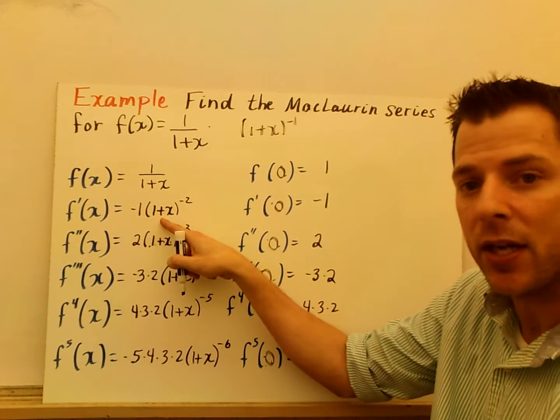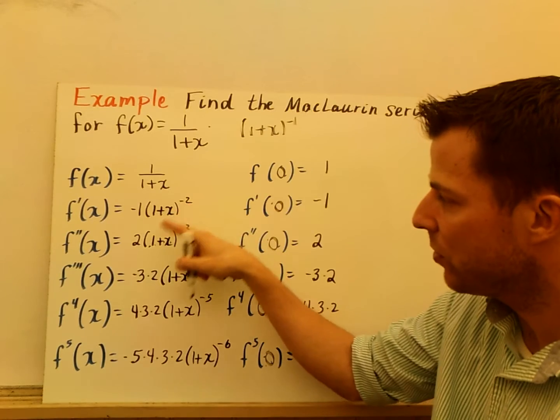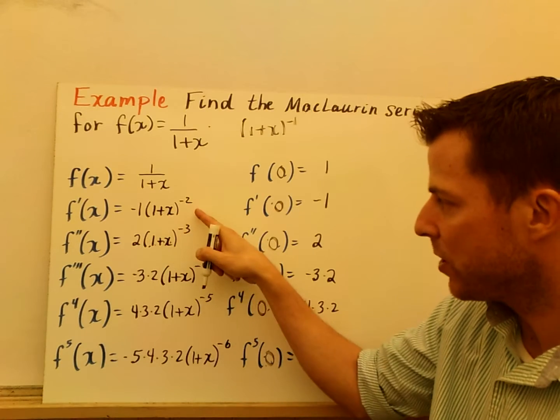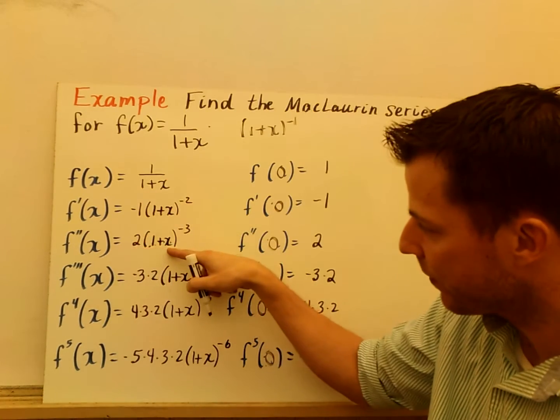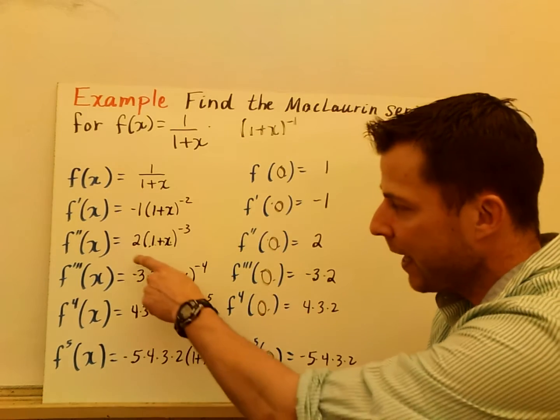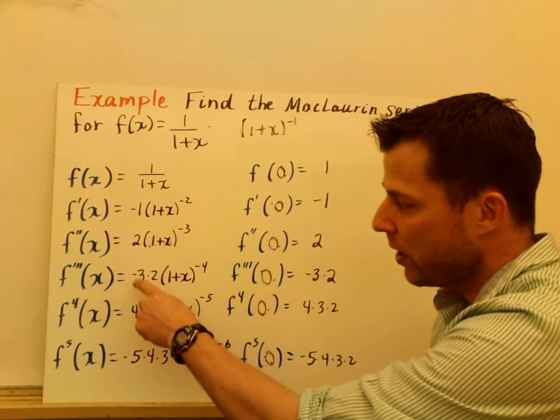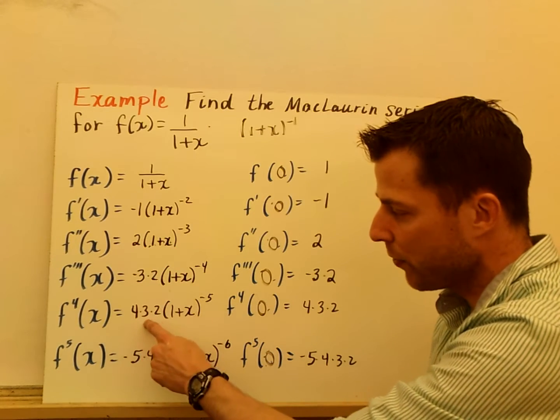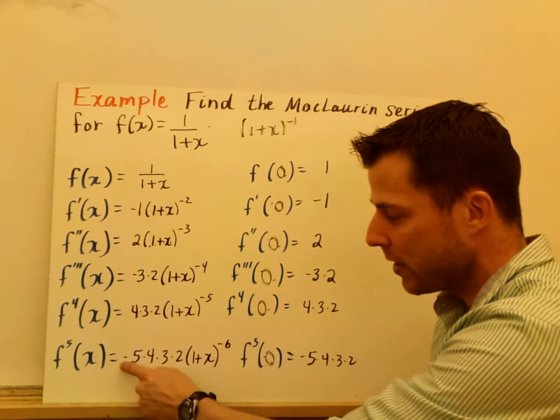So that's where we get the negative 1 times 1 plus x to the negative 2. f double prime is, you know, bring that 2 out front, take the derivative of the inside. So here's our derivatives, and notice the power is going down by 1 each time. And look out front, negative 1, 2, negative 3 times 2, 4, 3, 2, 5, 4, 3, 2, and it's negative.